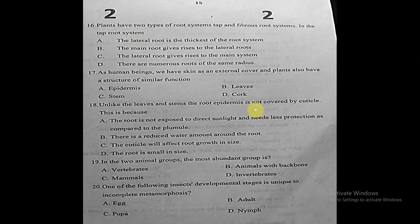Question sixteen: plants have two types of root systems — tap and fibrous. In the tap root system, the correct statement is that the main root gives rise to the lateral roots. The lateral root is not the thickest, and there are not numerous roots of the same radius. The correct answer is: the main root gives rise to the lateral roots.